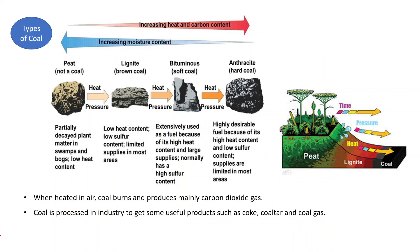Depending on moisture content and carbon content, coal can be classified into various categories. First is peat, which is not classified as coal because it is obtained from partially decayed plants and has low heat content — heat content meaning the amount of heat produced per kilogram of fuel burned. Under heat and pressure, peat converts into lignite, which is brown coal, also having low heat content, low sulfur content, and limited supplies in most areas.